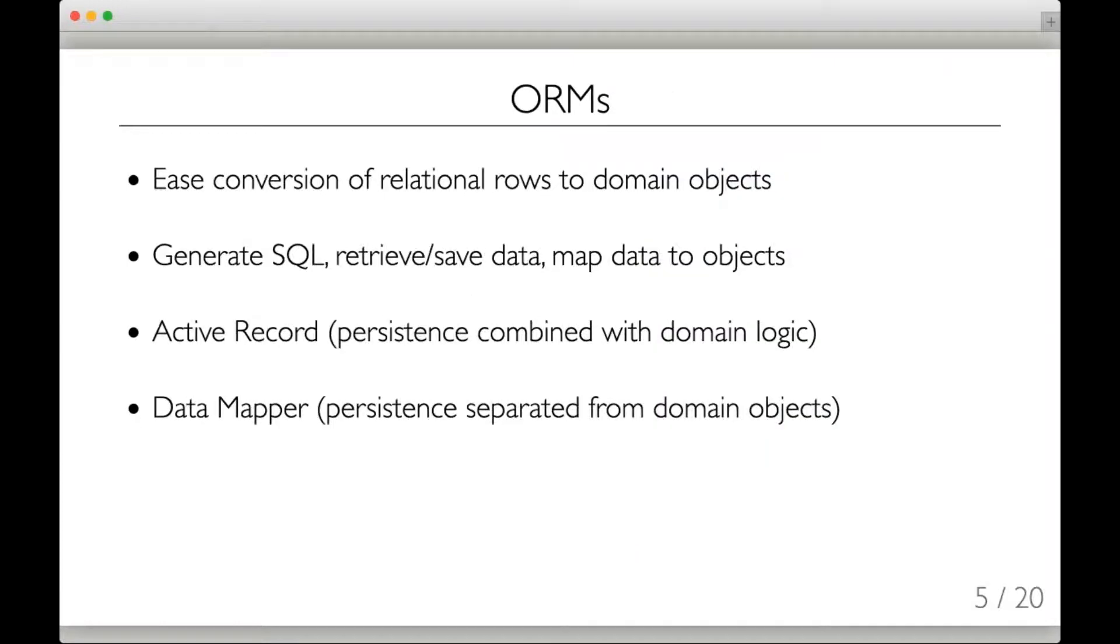This is where object-relational mappers, or ORMs, come into play. ORMs exist to help ease the conversion of this tabular and row data into domain objects by automating the generation of SQL, by retrieving and saving, that is, by persisting the row data, and then by mapping the data that comes out of the database over the domain objects.